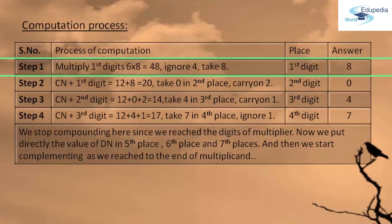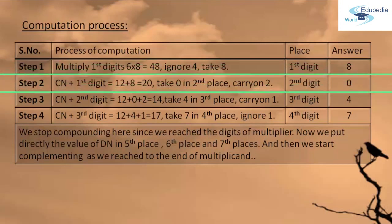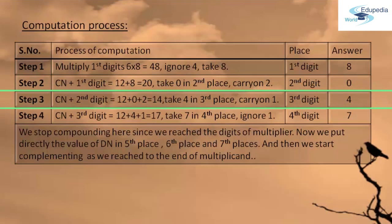Write 8 as the first digit from the right side in the answer. Moving to Step 2, we add CN with the first digit we got in the answer. So 12 plus 8 gives 20. It is a two-digit number, so we take 0 in the second place from the right and carry on 2. In Step 3, we add CN with the second digit: 12 plus 0 gives 12, but there is a carry-on of 2. Adding gives 14. So we take 4 in the third place and carry on 1.